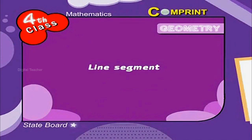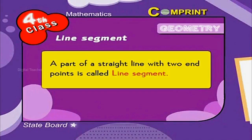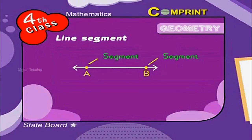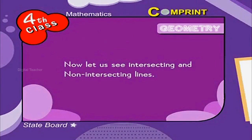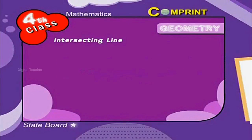Line segment. A part of a straight line with two end points is called a line segment. In this line, A and B are the end points of the segment.